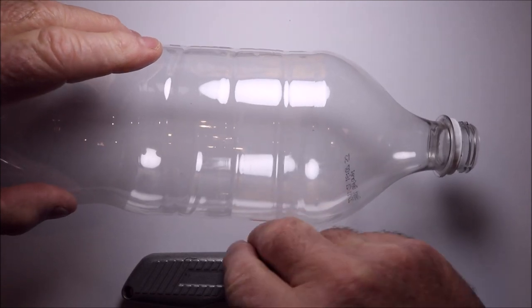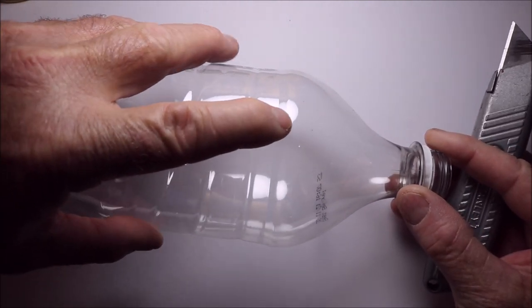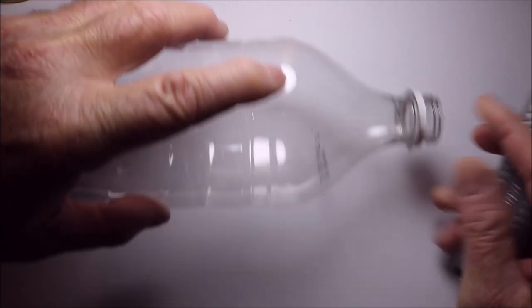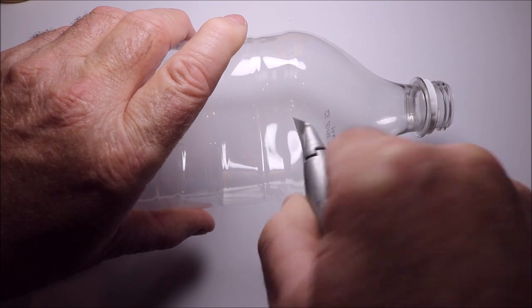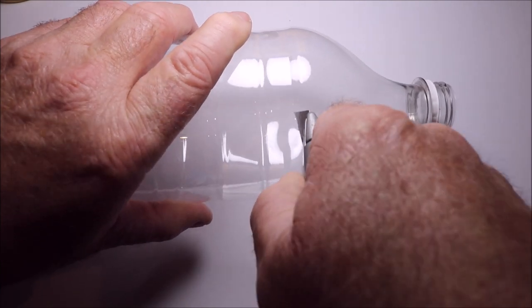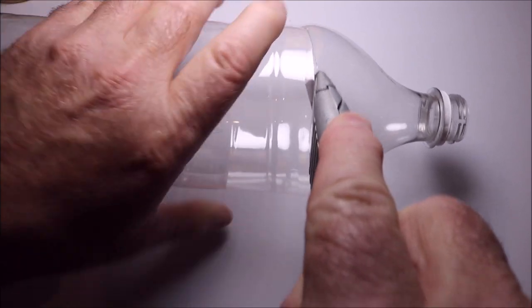And then what you need to do then is, I find just where the bottle starts to taper off, is where you want to cut with your knife. So just drop your knife in very carefully, and then just follow that all the way around.